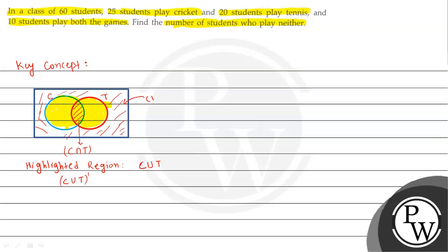The formula is: the number of students who play either cricket or tennis or both equals the number of students who play cricket, plus the number of students who play tennis, minus the number of students who play both cricket and tennis.